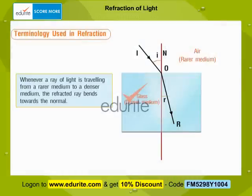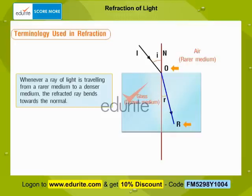Now, let's understand the phenomenon of refraction by studying the ray diagrams. Whenever a ray of light is travelling from a rarer medium to a denser medium, the refracted ray bends towards the normal. Here, IO is the incident ray, OR is the refracted ray, I is the angle of incidence, and R is the angle of refraction. In this case, angle I is greater than angle R.